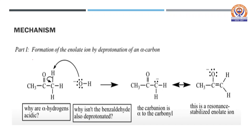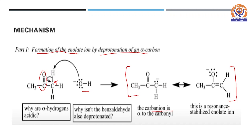In part one of the mechanism, there is formation of an enolate ion by deprotonation of an alpha carbon. The base acts on the alpha carbon of acetone, abstracts one hydrogen, and deprotonates it to form a carbanion, which is resonance stabilized. The alpha hydrogens of acetone are sufficiently acidic to be abstracted by base because the difference in electronegativity between carbon and oxygen causes oxygen to pull electron density towards itself, making the carbonyl carbon electron deficient, and that electron deficiency is relayed onto the alpha hydrogens, making them easily abstractable.